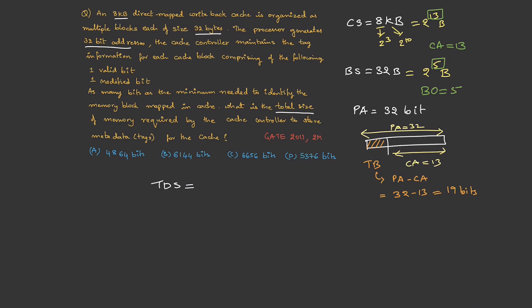We have some meta information as well, so I can write this as tag bits plus the meta bits multiplied by the number of cache lines. Tag bits we know, but meta bits we need to write. The meta bits, we have one valid bit and one modified bit, so 1 plus 1, we have 2 meta bits. Then, how about the number of lines? Number of lines is cache size by block size. This is 2^13 by 2^5, which is 2^8.